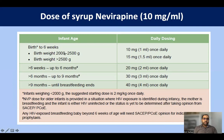Nevirapine dosing is weight-based: less than 2 kg — 2 mL/kg once daily; 2 to 2.5 kg — 10 mg once daily; more than 2.5 kg — 15 mg once daily. The syrup concentration is 10 mg/mL. For older infants: 6 weeks to 6 months — 20 mg; 6–9 months — 30 mg; more than 9 months — 40 mg. These doses apply when an infant is later identified as HIV-exposed and not yet on prophylaxis.